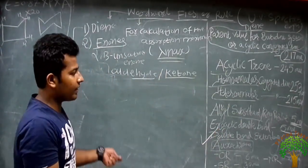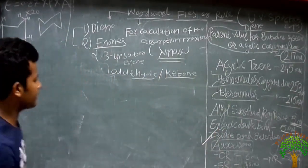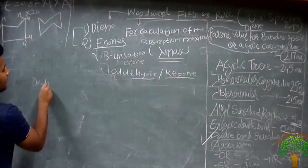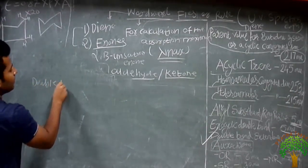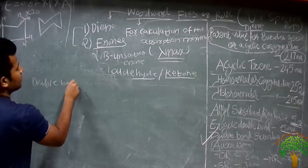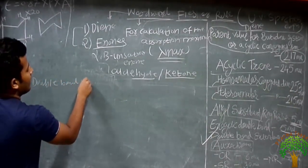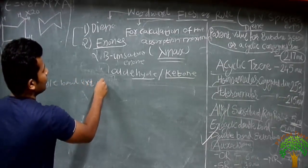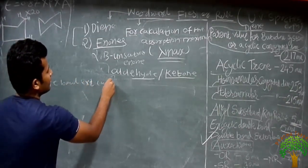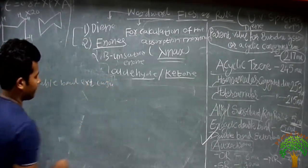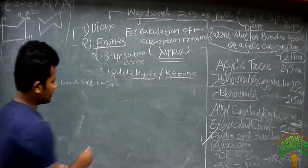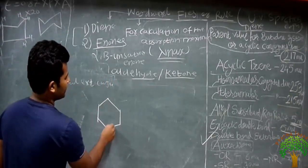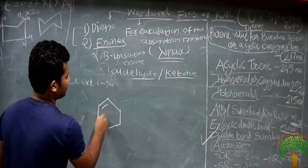What is meant by double bond extending conjugation? Many students are confused by this term. Double bond extending conjugation means an additional double bond that extends the conjugated system — for example, adding a double bond to a benzene ring or extending the conjugation of a diene system.